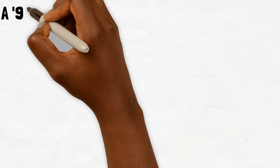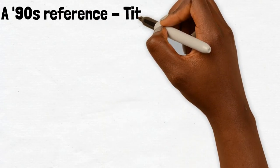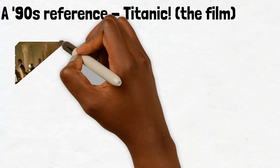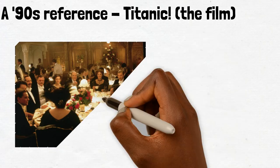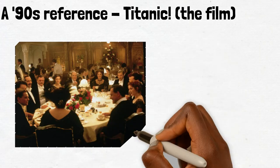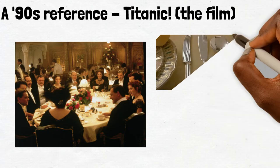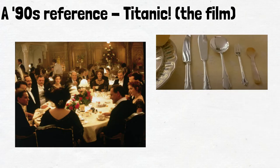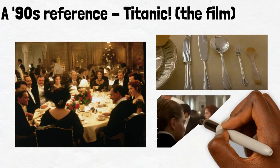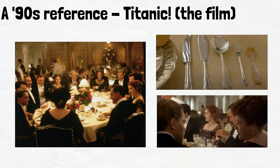A good example to start with when explaining cultural capital comes from the film Titanic. There's a scene where Leonardo DiCaprio's character Jack, who is from a working-class background, is invited to a formal dinner with Kate Winslet's character Rose and her upper-class family. At the table Jack is presented with four sets of cutlery. Another diner, Molly, notices his perplexed expression and discreetly whispers to him to start on the outside and work his way inwards. This knowledge of which cutlery to use and when is a great example of cultural capital at play.